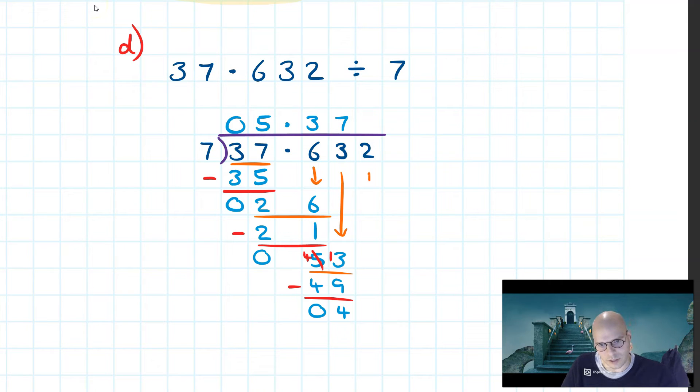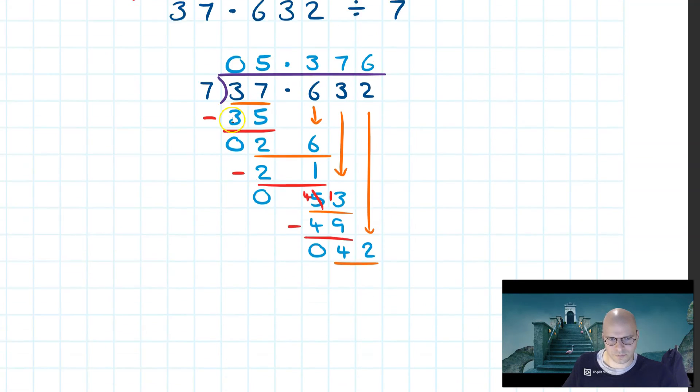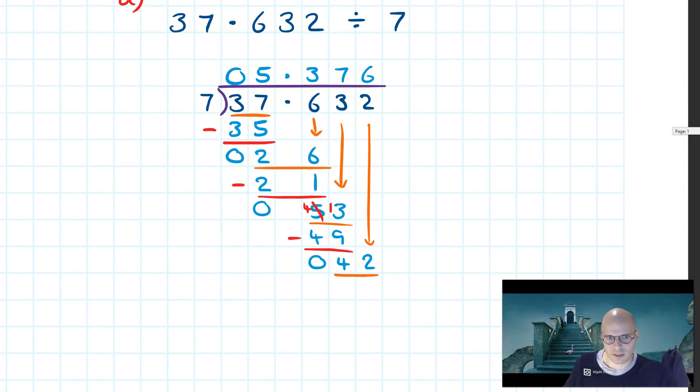Finally bringing down the 2, we get 42. Building our friendship bridge, we then ask how many times does 7 fit inside of 42, and of course the answer to that is 6. So we find in this instance that the division of 37.632 divided by 7 is going to be 5.376.